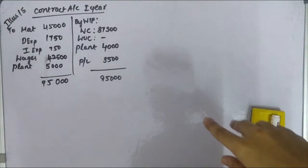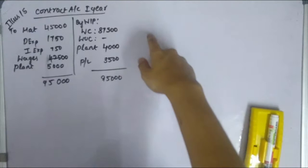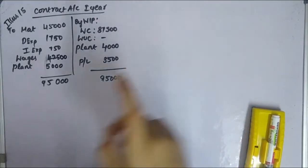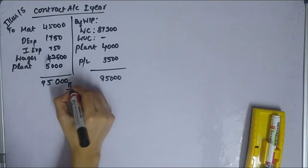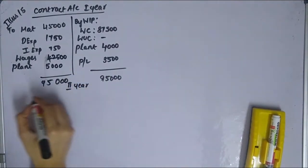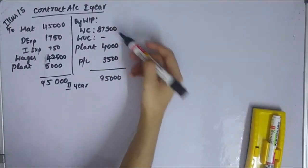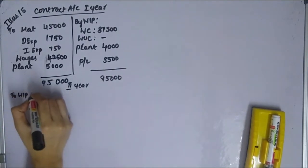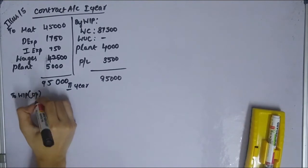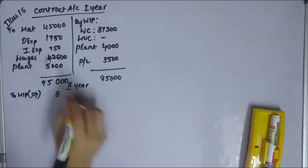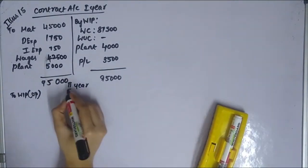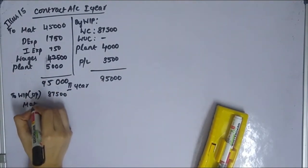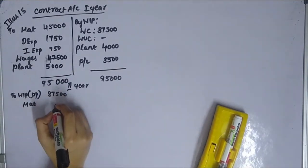Now we prepare the second year contract account. The closing work in progress from the first year becomes the opening work in progress for the second year. Work certified brought forward is Rs. 87,500. For year 2, material is Rs. 55,000.